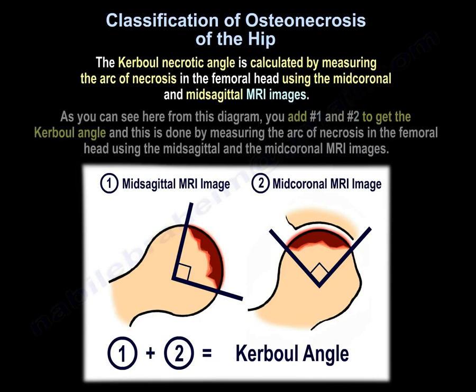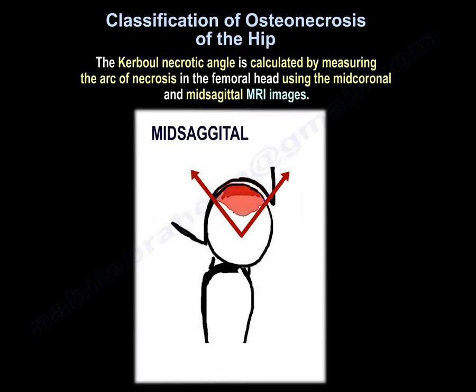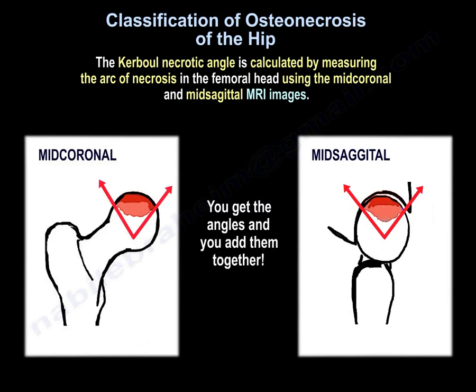As you can see here from this diagram, you add angle number one and angle number two to get the carbone angle. These are measured using the arc of necrosis in the femoral head from the mid-sagittal and mid-coronal MRI images. Here is the mid-coronal and here is the mid-sagittal. You get the angles and add them together.